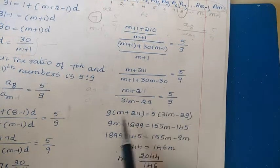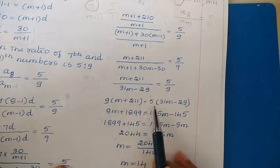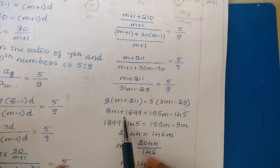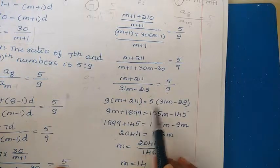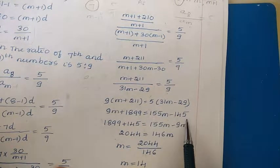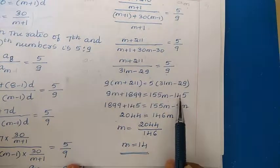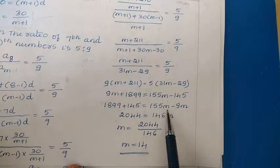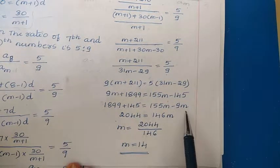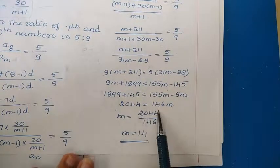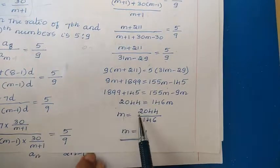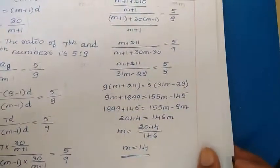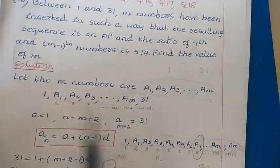Cross-multiplying: 9(M + 211) = 5(31M − 29), giving 9M + 1899 = 155M − 145. Rearranging: 1899 + 145 = 155M − 9M, so 2044 = 146M, and M = 2044/146 = 14. The value of M is 14.